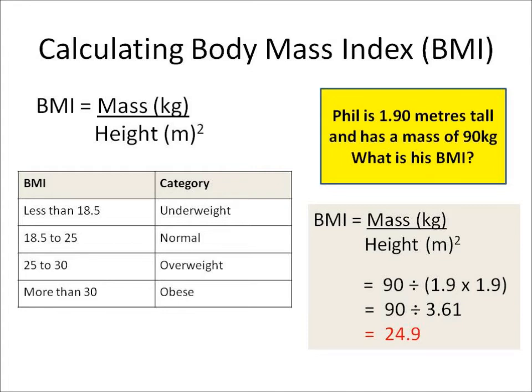First of all I need to do the height squared, so I do 1.9 times 1.9, and that comes to 3.61. Then I do 90 divided by 3.61, and that comes to 24.9. So that tells me that Phil is just normal weight — he's almost overweight, but he's just normal weight.